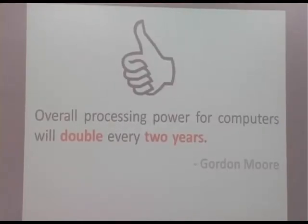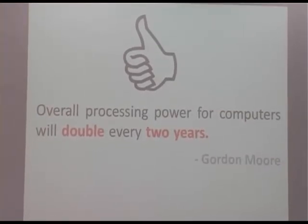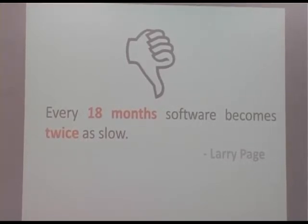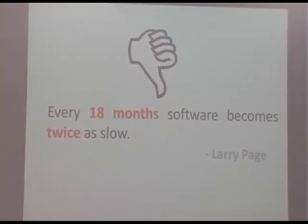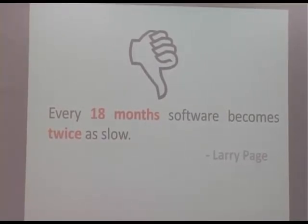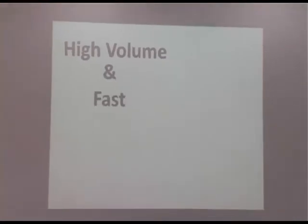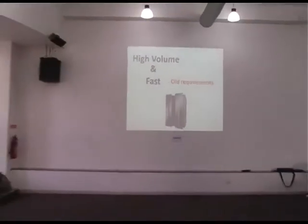Talking about computing power: we all know Moore's Law — every two years, hardware processing power doubles. But can we use all that hardware effectively? There is a contradicting law, coined by Google co-founder Larry Page and echoed by Bill Gates: every one-and-a-half years, your software becomes slow. We all know this — on 256 MB RAM, how fast did Windows XP boot? Now we have 4 GB or 8 GB, and Windows 7 is slower. Software becomes slow and you need more computing power. The requirement for high volumes of data and faster processing started back in 1960-70, when the only option was mainframes, and only big companies could adopt them.